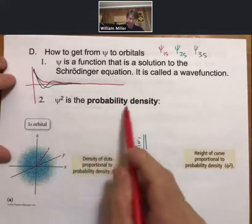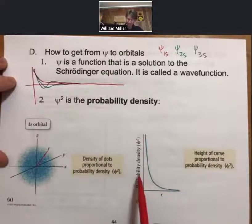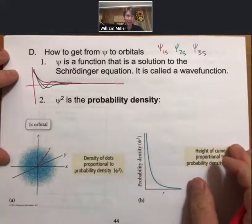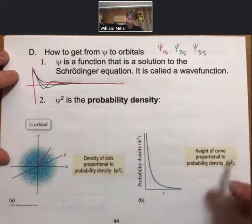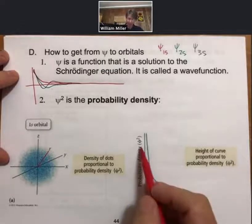So psi squared is the probability density. The probability density, and again, we're not going to talk about why this is, but let's assume that it's true. Probability density is just going to square psi.